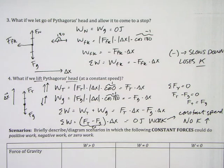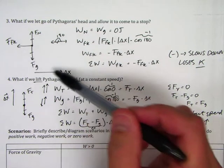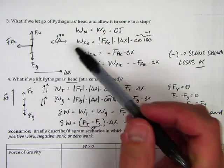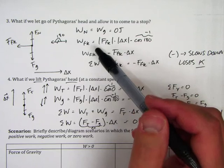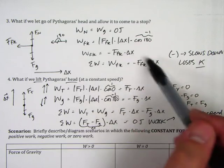So in quick review, when you're doing the work on an object from multiple forces, set it up, draw a free body diagram, figure out the displacement, draw that vector in, and then find the work done by all the individual forces, and then sum them together to figure out the network.